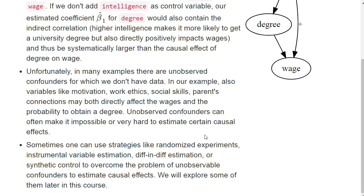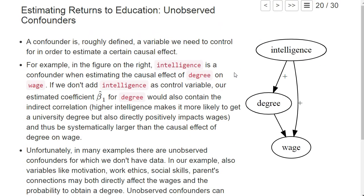Sometimes we can use strategies like running a randomized experiment — for example, throwing a dice to determine who is allowed to go to university. Sometimes we have random elements, such as limited seats assigned via a random mechanism, that can help estimate causal effects. Other strategies include instrumental variable estimation, difference estimation, and the synthetic control approach, which we will see later in the course. These are all ideas to overcome the problem of unobservable confounders. We will explore some of those in more detail later, but for now we will go back to our wine example.